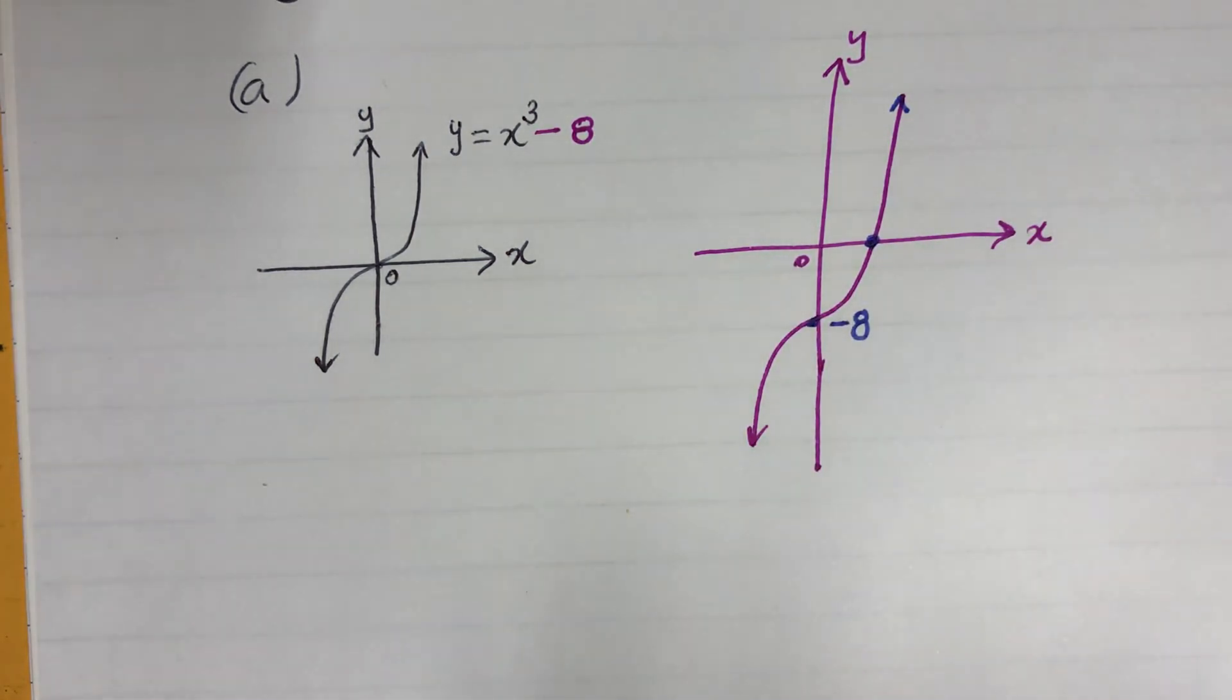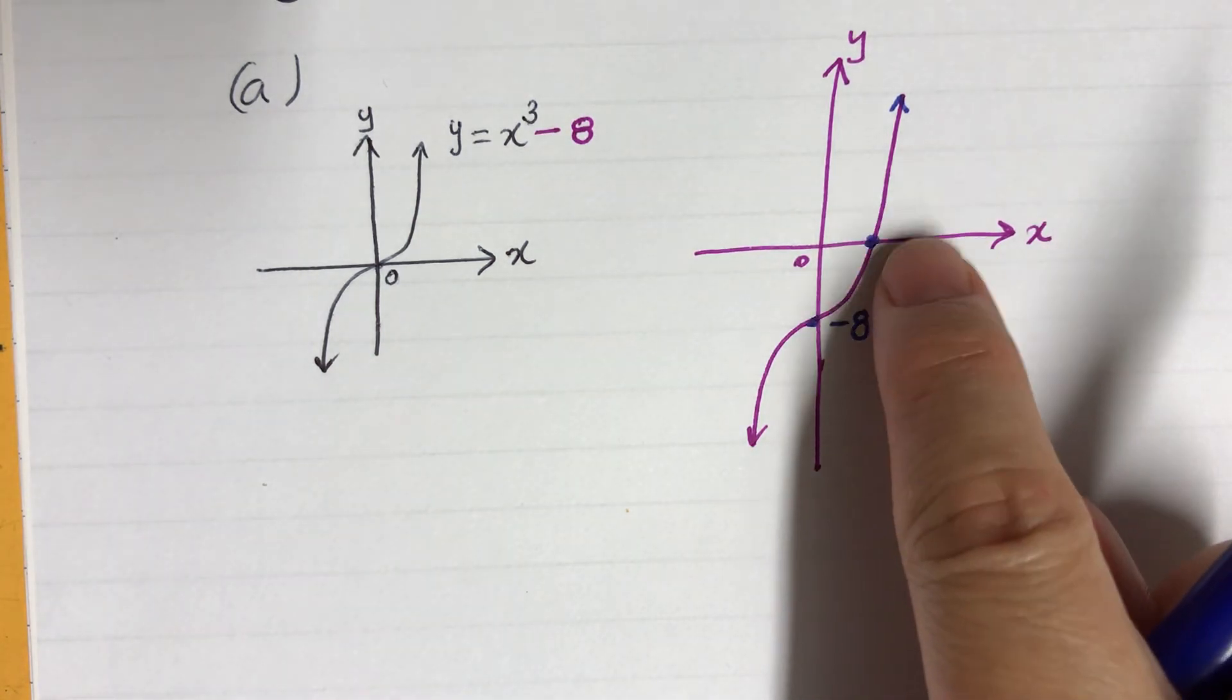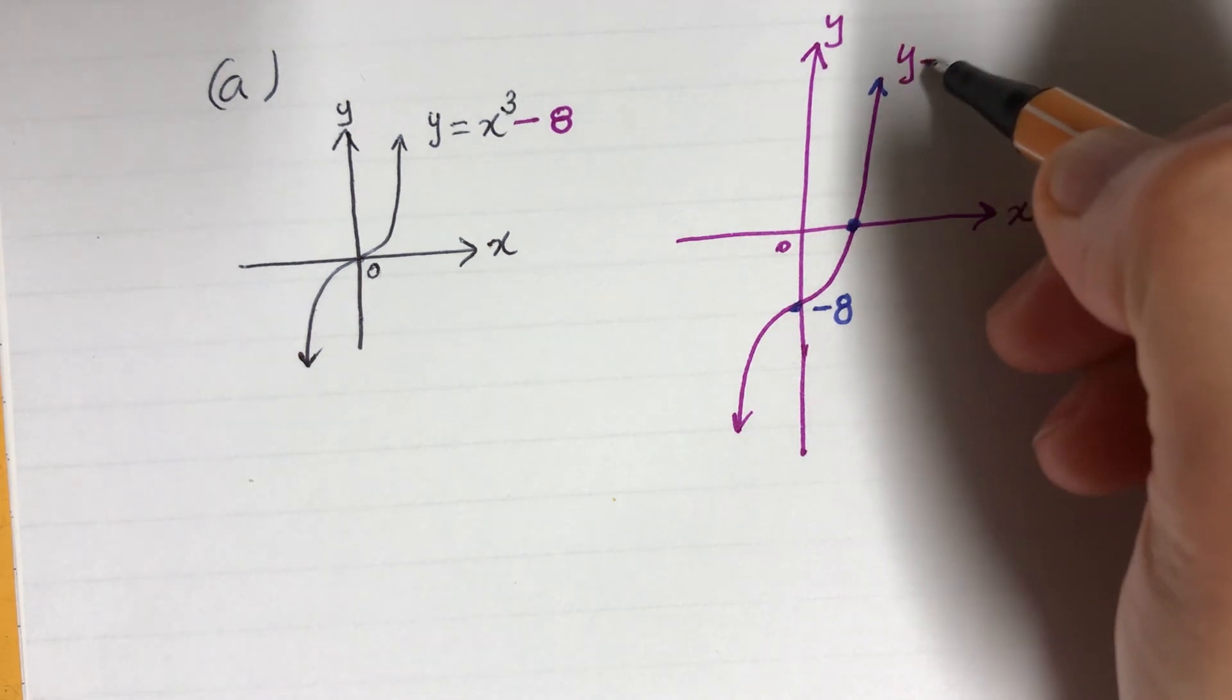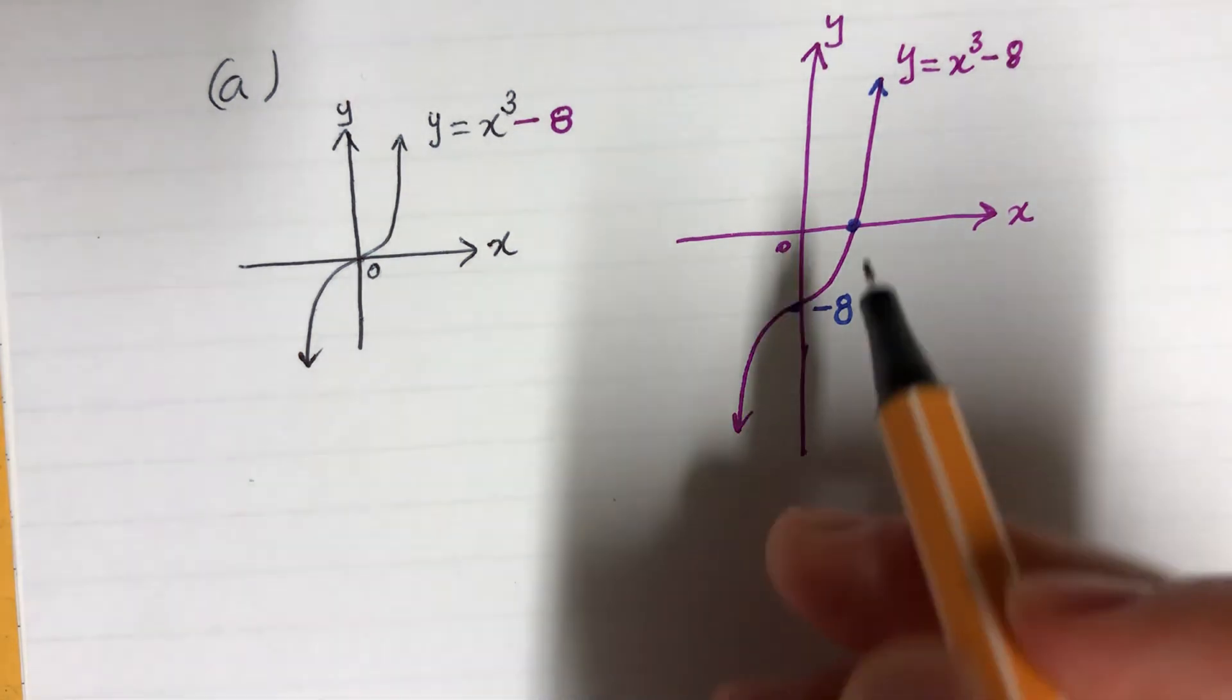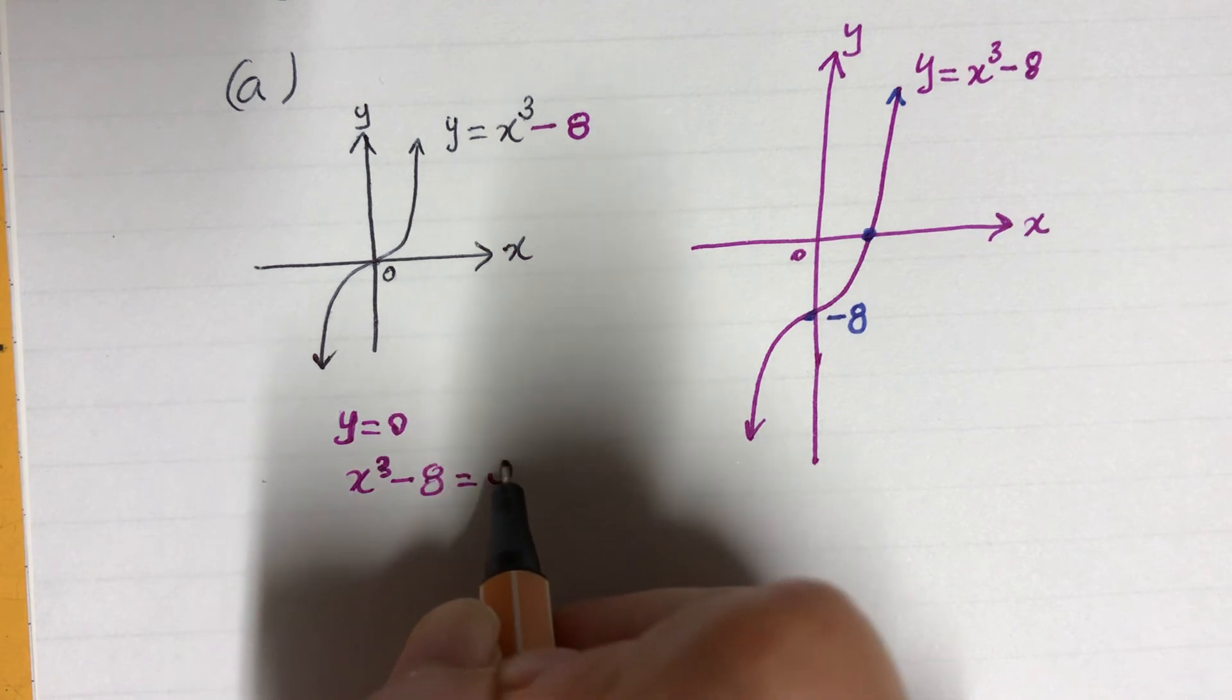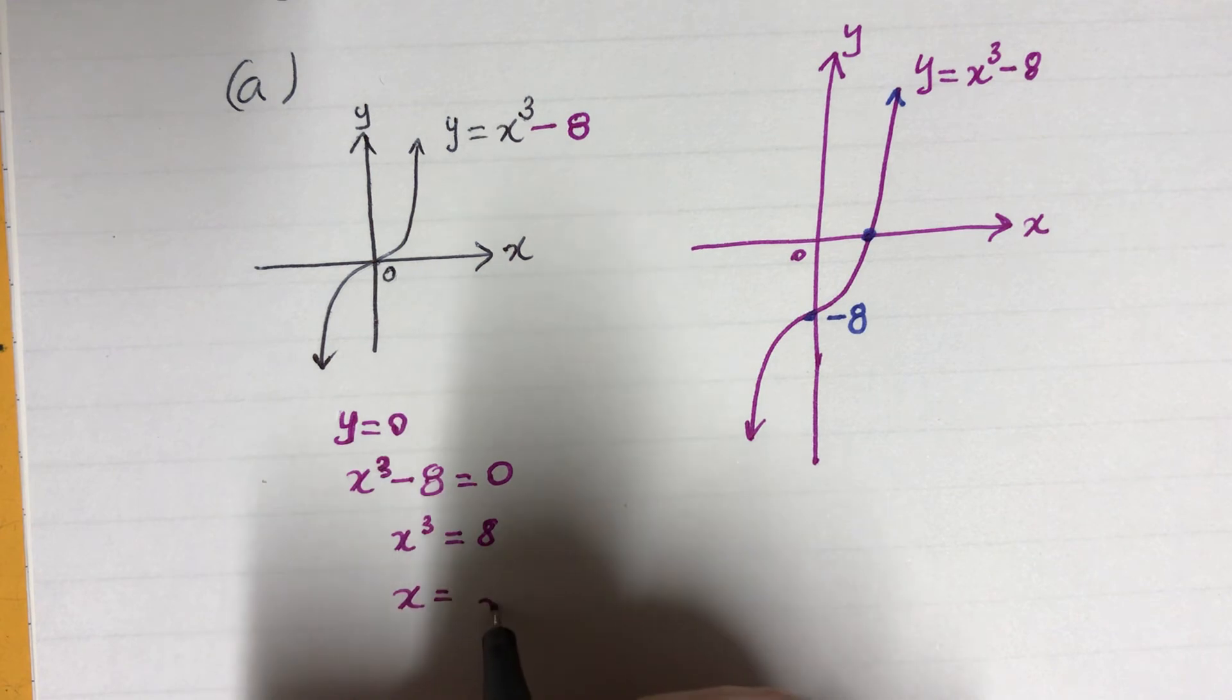I will have an x-intercept here. X-intercept is when y equals 0. This is y equals x cubed minus 8. At this point, y equals 0, so x cubed minus 8 equals 0, and x cubed equals 8.